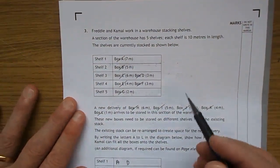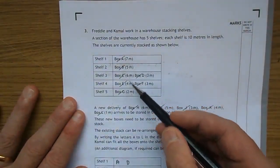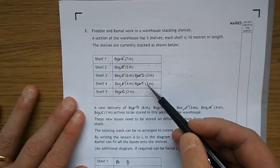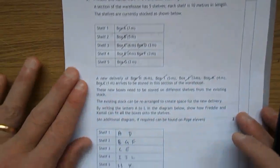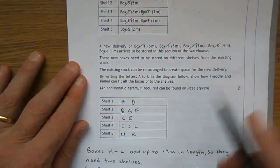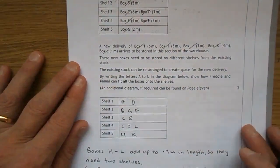What else did I do? B, G, and F. B is 5, 6, 7, 8, 9, 10, yep, they can all go on the one shelf. Then we have it there, B, G, and F on the one shelf.